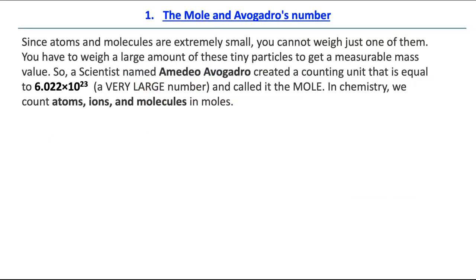So here's our first topic for today's lesson: the mole and Avogadro's number. Since atoms and molecules are extremely small, you cannot weigh just one of them. It's impossible to do. So you have to weigh a large amount of these tiny particles to get a measurable mass value. So a scientist named Amedeo Avogadro, who lived in the 1800s, created a counting unit that is equal to 6.022 times 10 to the 23. It's a very large number, as you can see, and he called it the mole. In chemistry, we count atoms, ions, and molecules in moles.